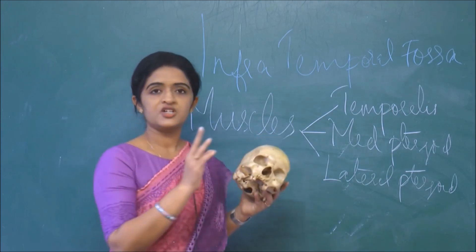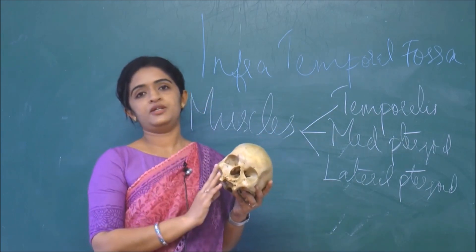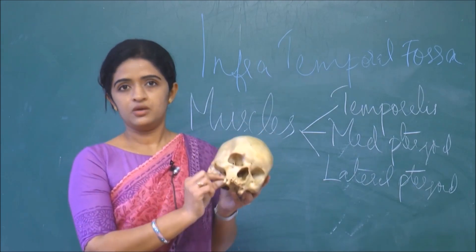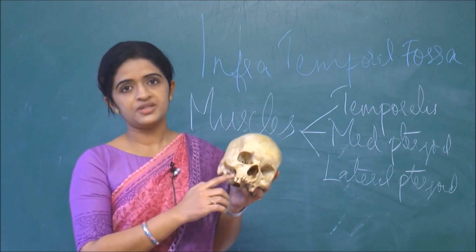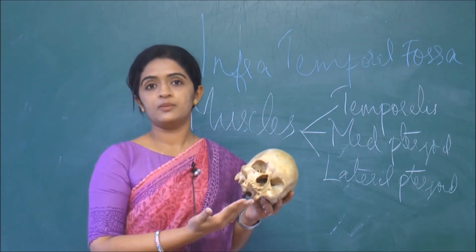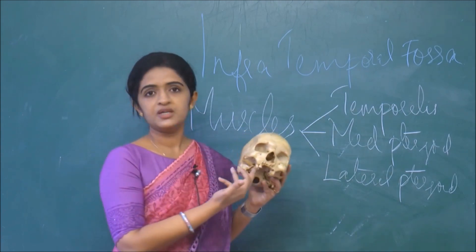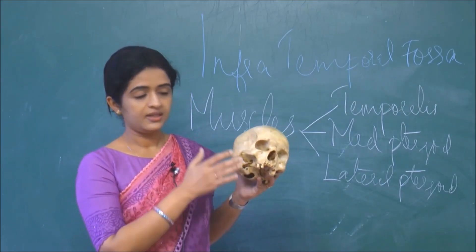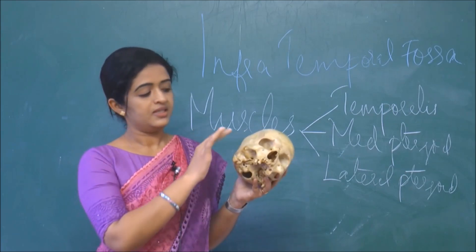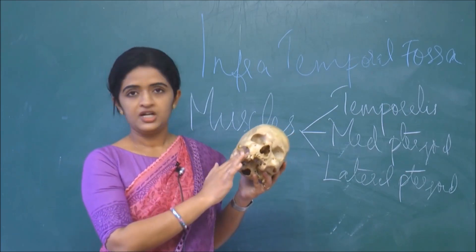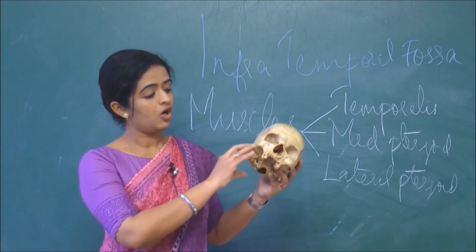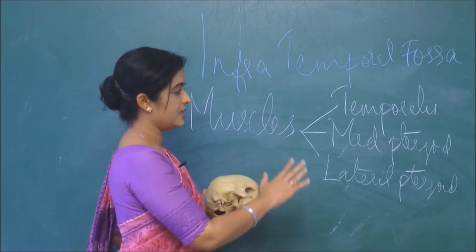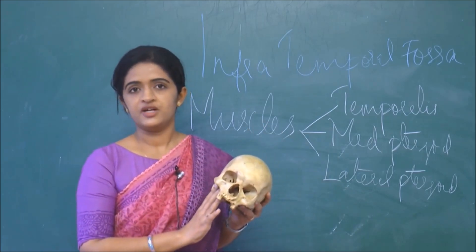And the muscle arising from the medial surface of the lateral pterygoid plate is called the medial pterygoid muscle. So these two muscles — lateral pterygoid and medial pterygoid — are named according to their origin from the lateral pterygoid plate: arising from the lateral surface gives lateral pterygoid, and from the medial surface gives medial pterygoid. So all three muscles — temporalis, medial pterygoid, and lateral pterygoid — are filling the infratemporal fossa.